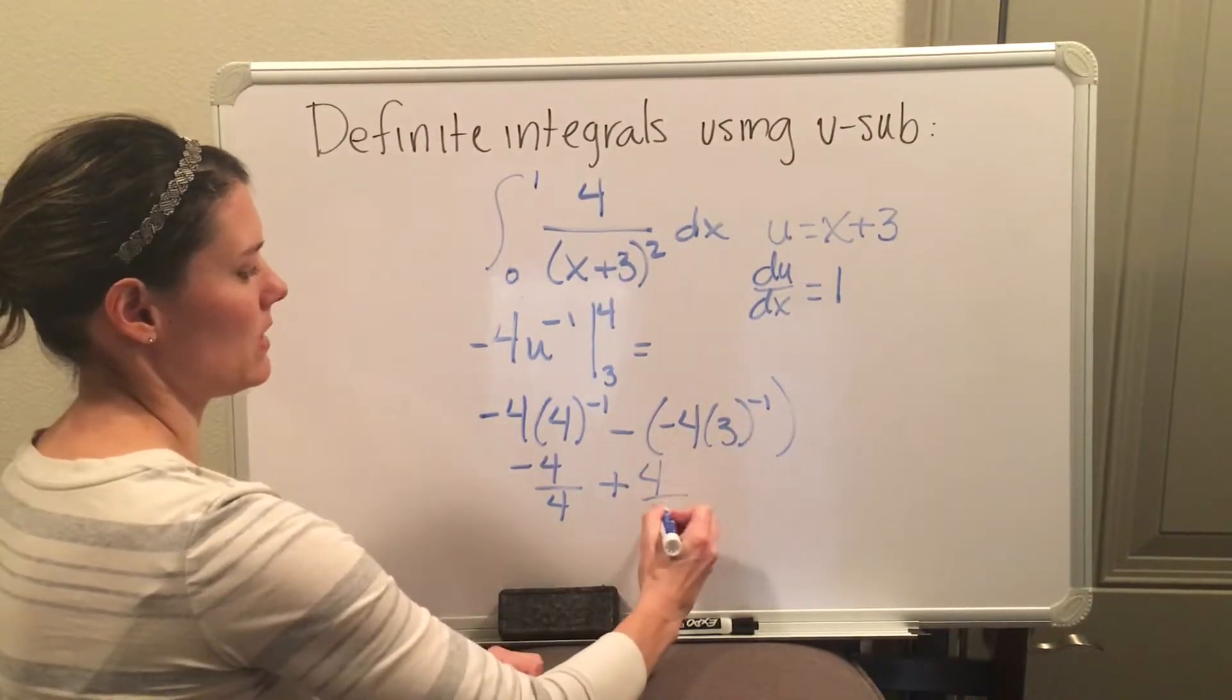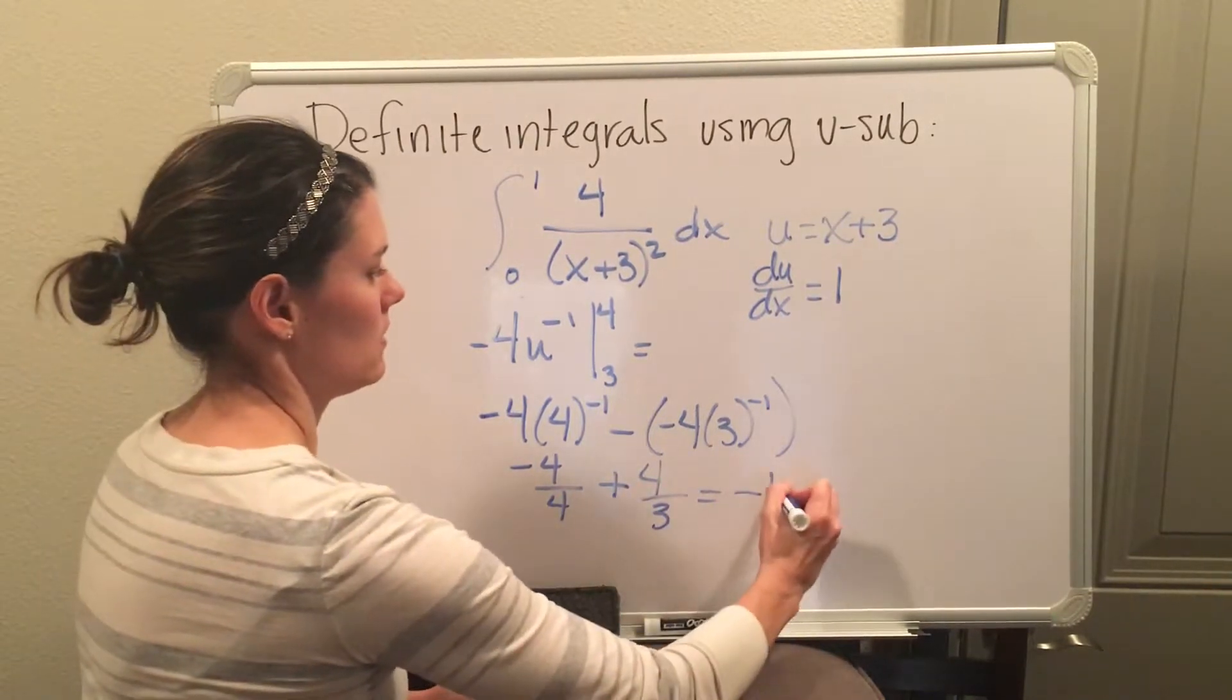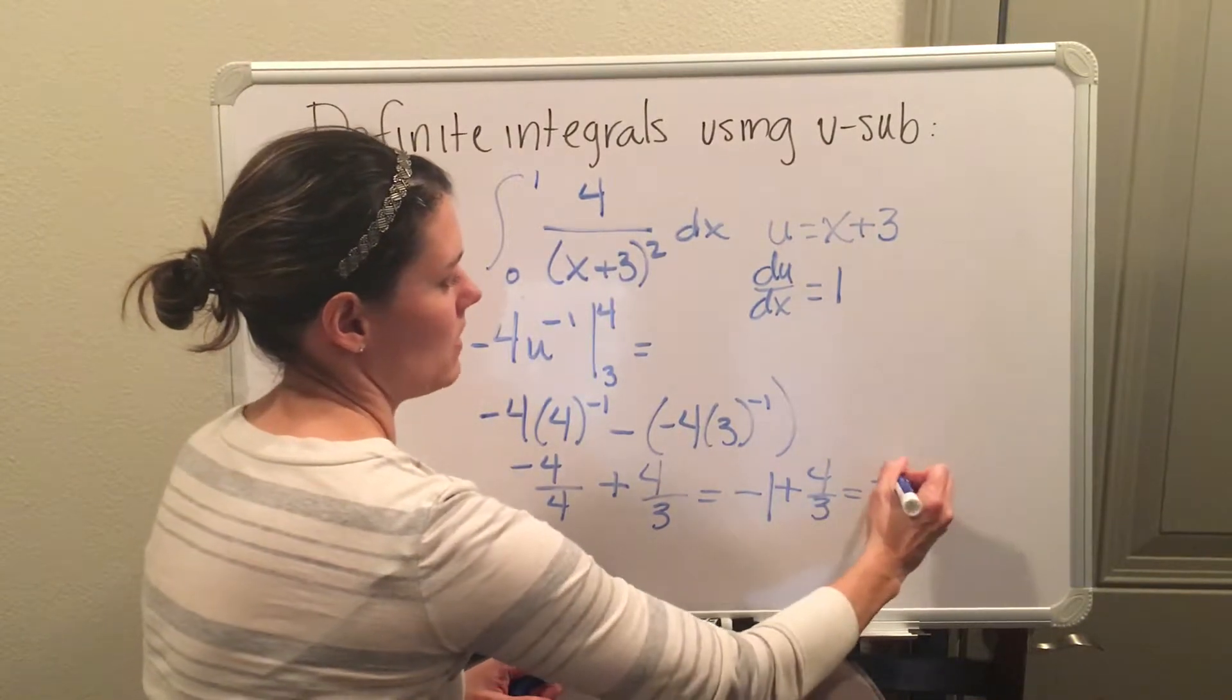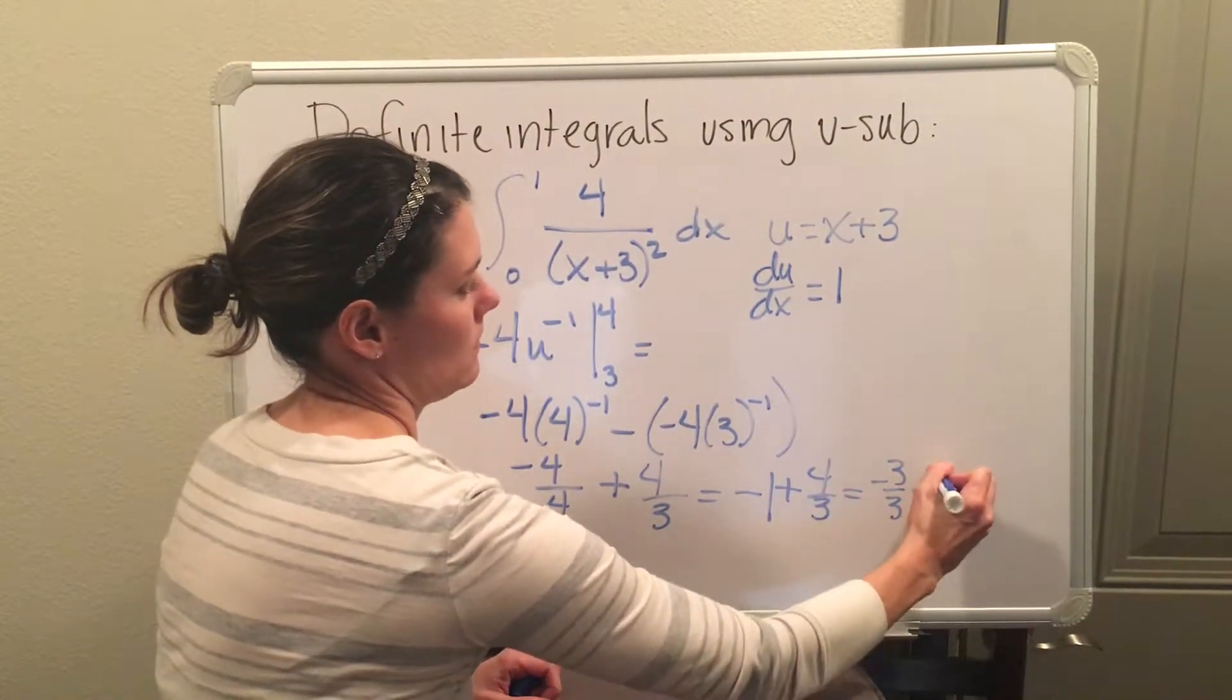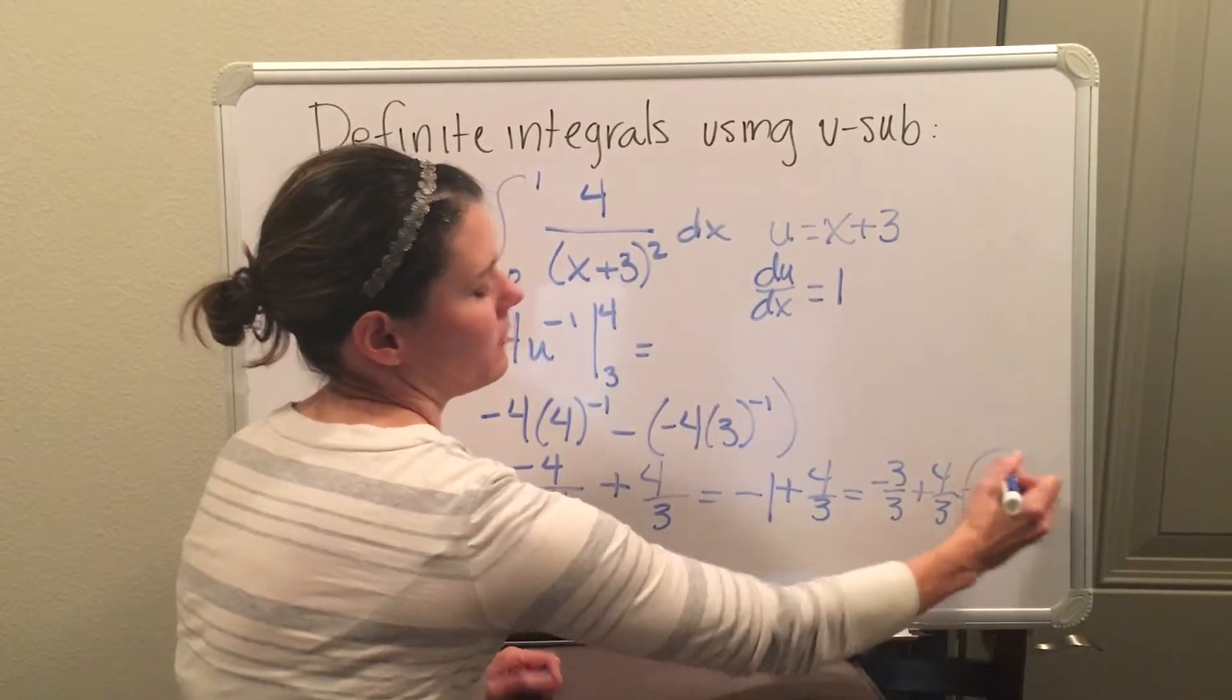Minus a negative is a positive. Again, 3 to the negative 1 means you bring it underneath. And I'm left with negative 1 plus 4 thirds. And then you can get a common denominator, and we end up with a positive 1 third as your final answer.